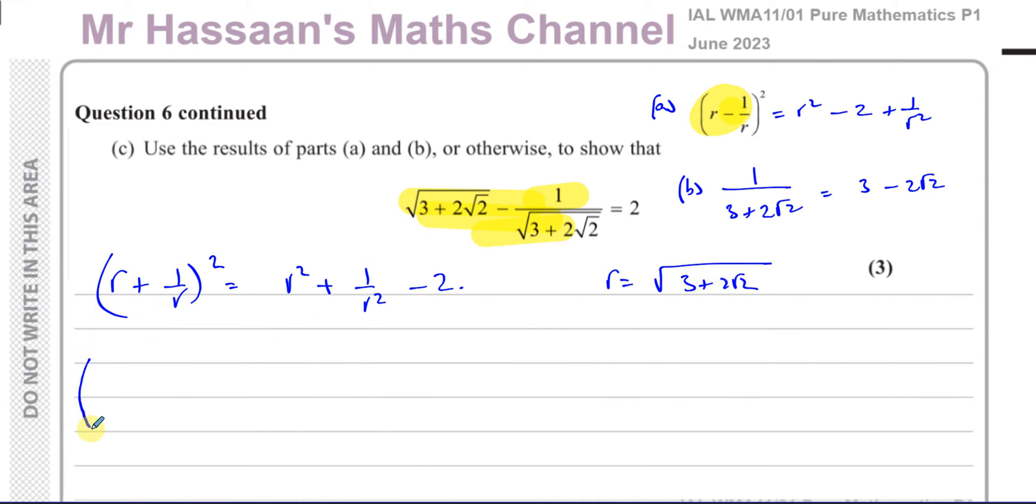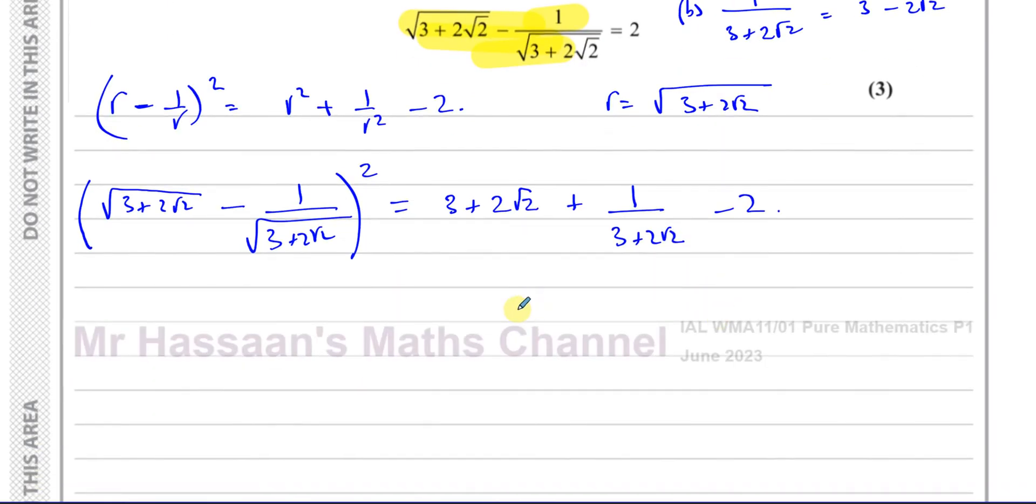So if I think of R as the square root of 3 plus 2 root 2, then I can say that if I use the same kind of pattern, this would be 3 plus 2 root 2. Okay, sorry, this is minus here, what I'm doing. That's a minus here. It's R minus, minus 1 over the square root of 3 plus 2 root 2. When I square that, what I should get is basically the same thing here but squared, which would be 3 plus 2 root 2. That's the same thing as this squared, plus 1 over the square of this, which is going to be 3 plus 2 root 2. And then I'll have a minus 2 at the end. So that's equal to this, and that's going to be equal to,